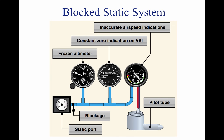If an aircraft begins to climb after a static port becomes blocked, the airspeed begins to show a decrease as the aircraft continues to climb. This is due to the decrease in static pressure on the pitot side, while the pressure on the static side is held constant. A blockage of the static system also affects the altimeter and VSI. Trapped static pressure causes the altimeter to freeze at the altitude where the blockage occurred. In the case of the VSI, a blocked static system produces a continuous zero indication.